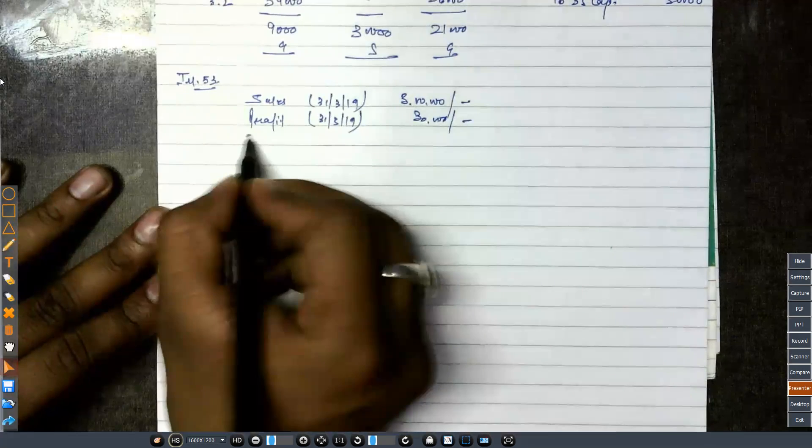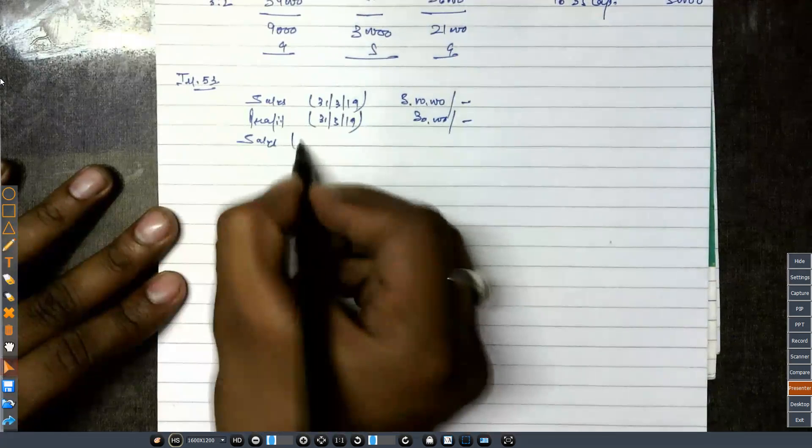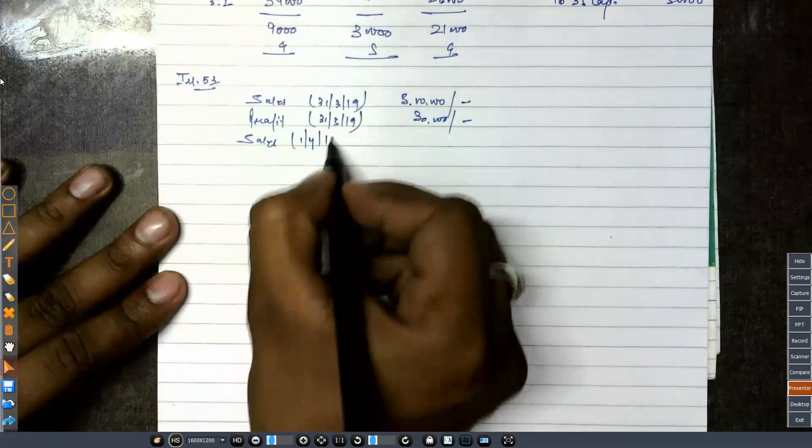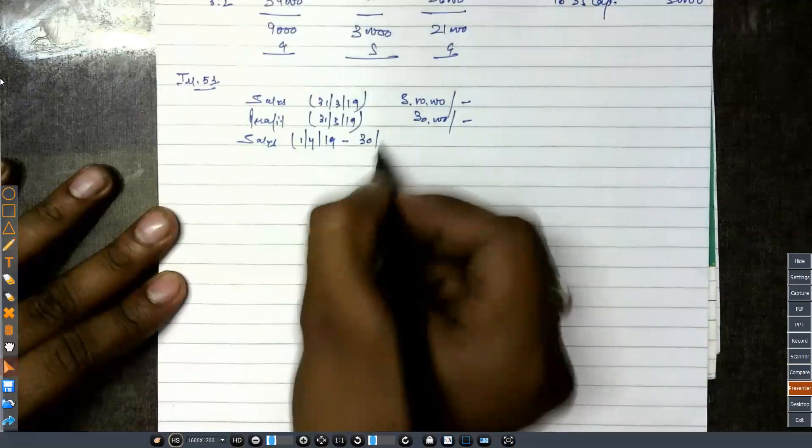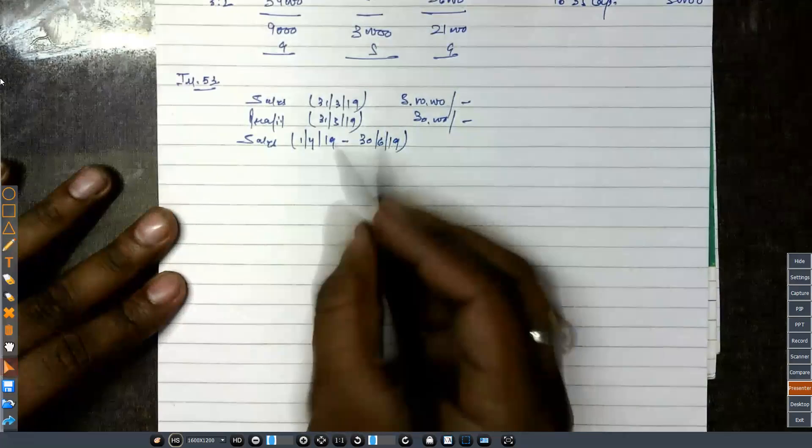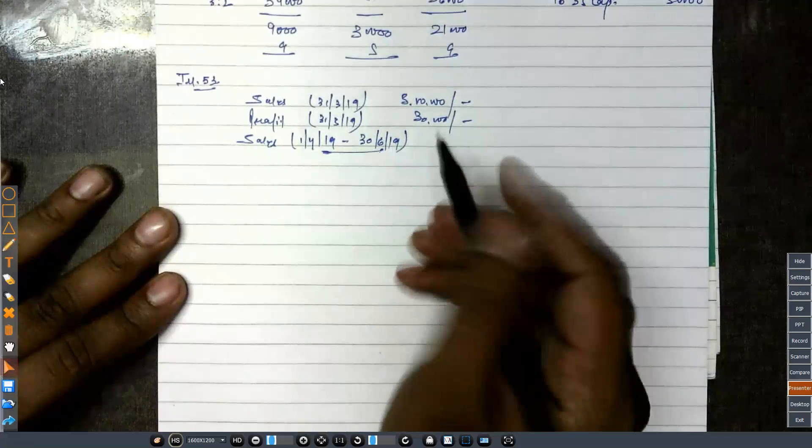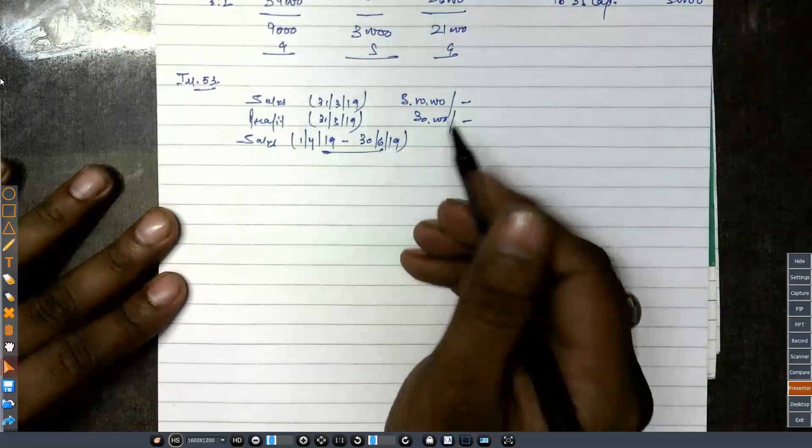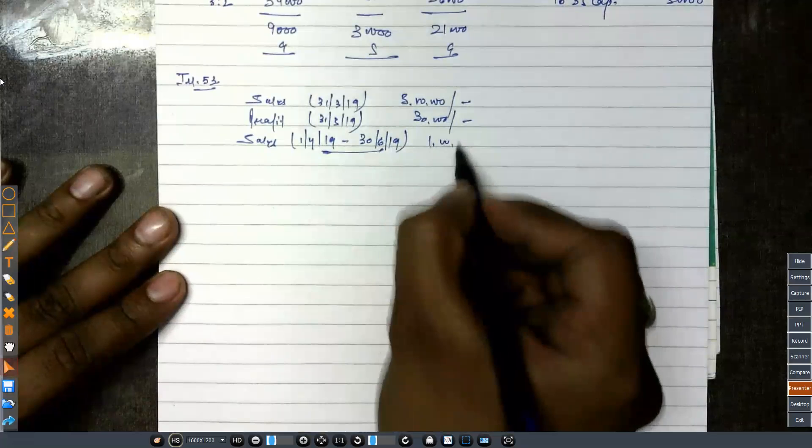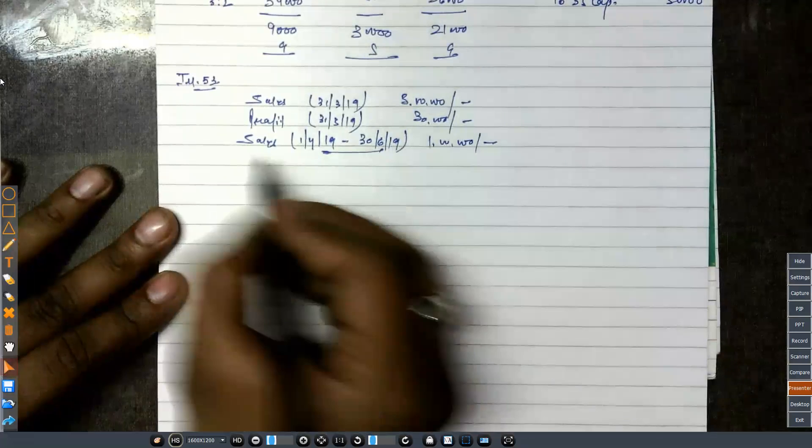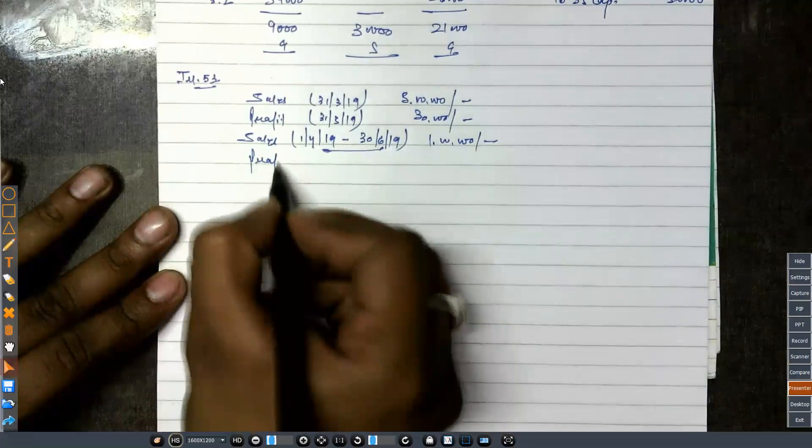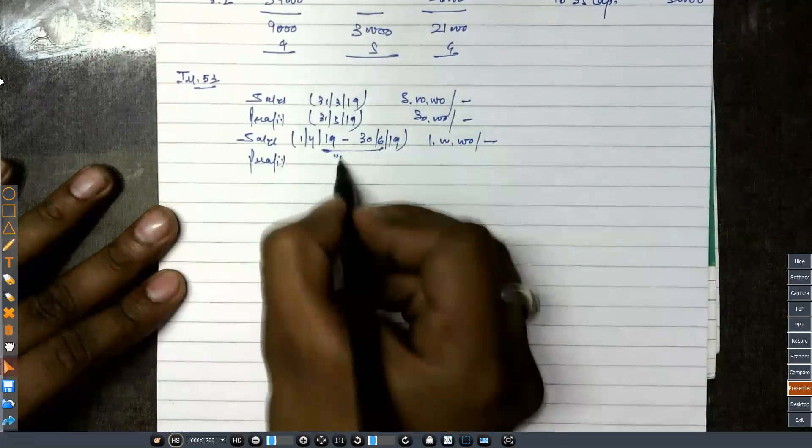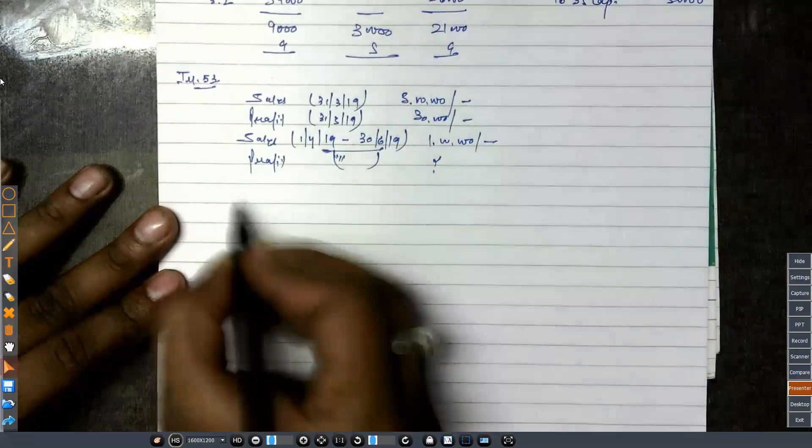The second thing - you have been given the sales from April 2019 for the three months. So what do you do? You have been given the sales, now you have to calculate the profit. It is easy.